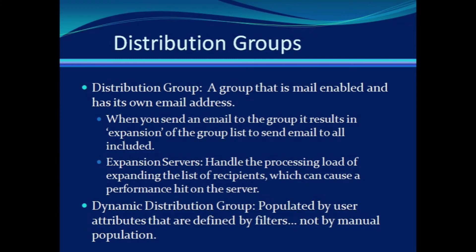This is slightly different from a dynamic distribution group. A distribution group has a static list of members, whereas a dynamic distribution group is populated by user attributes that are defined by filters. We define the filters, and then as individuals meet the criteria for the filters, they are added or removed from the dynamic distribution group.